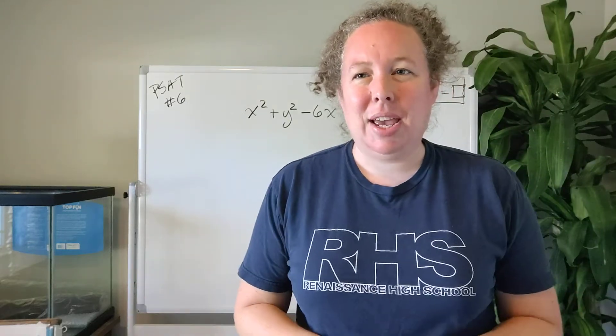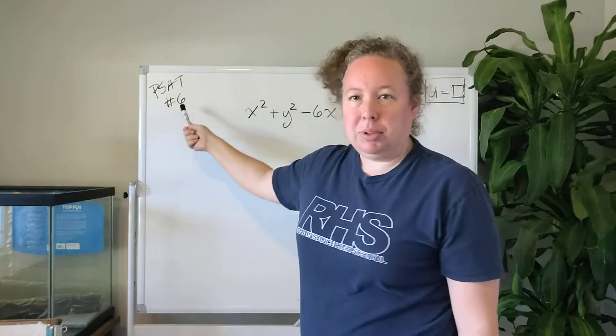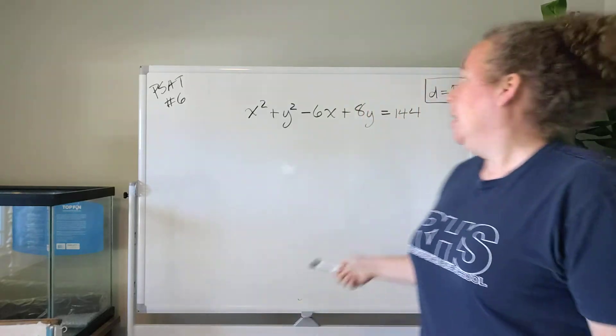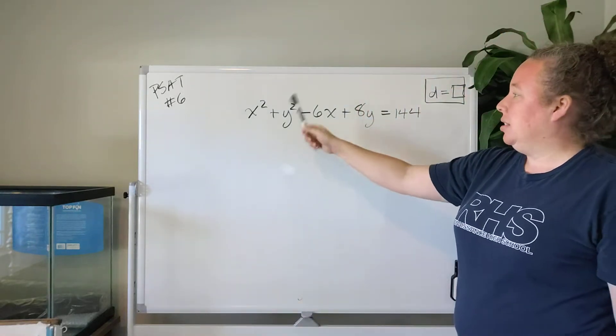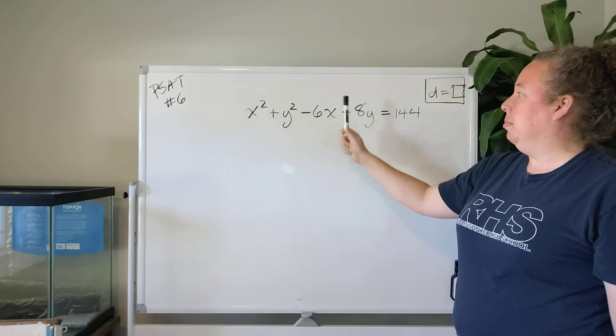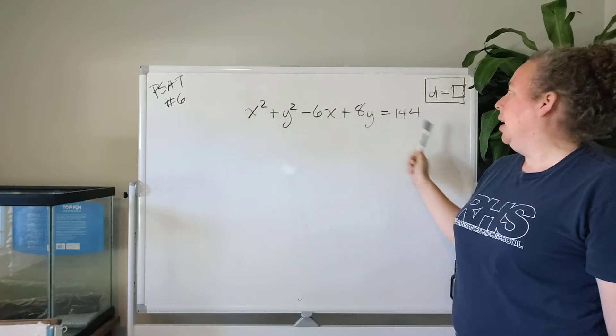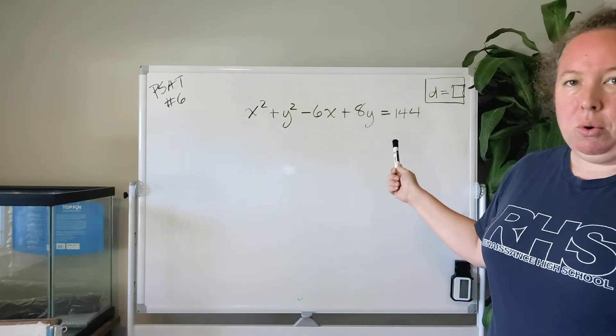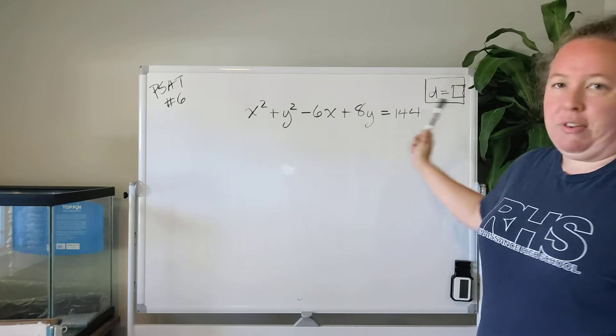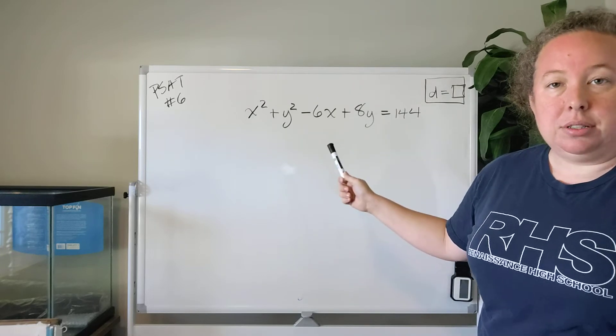All right, hi Zoe! Let's go ahead and take a look at problem number six first. The problem that we're given is x squared plus y squared minus 6x plus 8y equals 144. And what we're asked to find is the diameter of this circle.